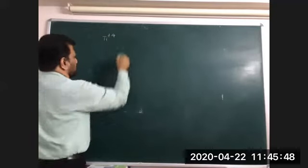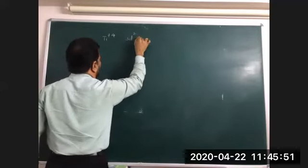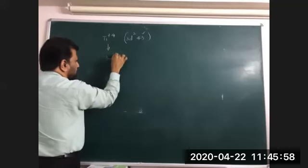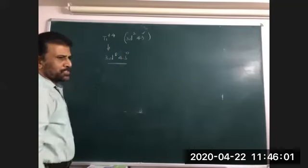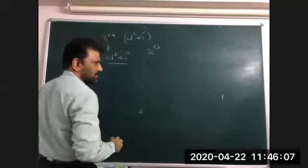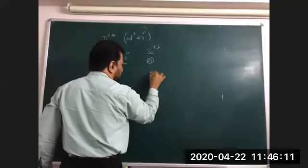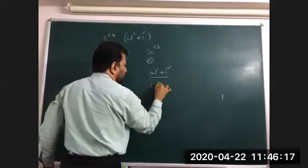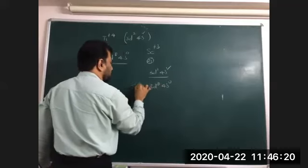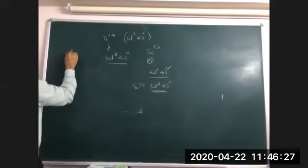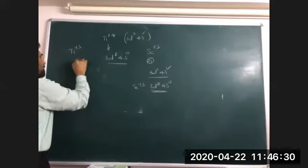Titanium in +4 state: configuration is 3d⁰4s⁰ — so Ti⁴⁺ salts are also colorless. Scandium (atomic number 21) has configuration 3d¹4s² — in +3 state it is 3d⁰4s⁰ — no unpaired electrons, so scandium salts are not colored. Ti³⁺ is colored because its configuration is 3d¹4s⁰ — one unpaired electron, enabling d-d transition.